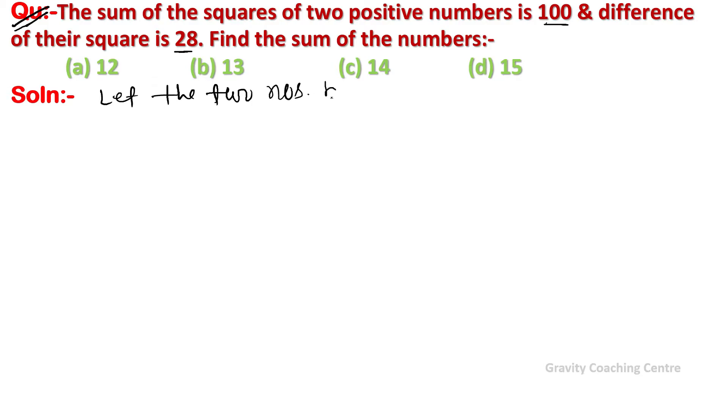According to the question, the sum of the square of two positive numbers is 100, means x² plus y² equal to 100. And the difference of their square, x² minus y² equal to 28. So suppose this equation is first and this one is the second.